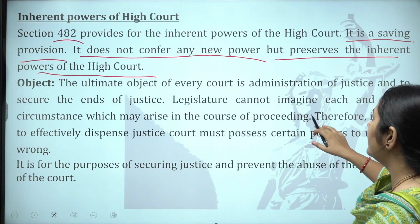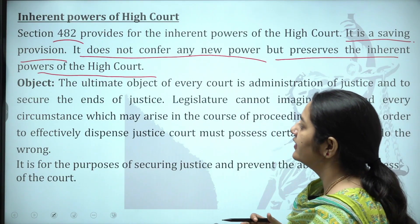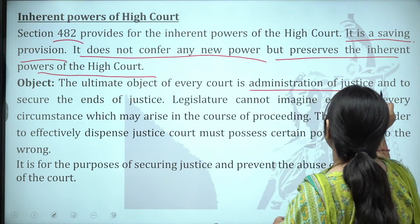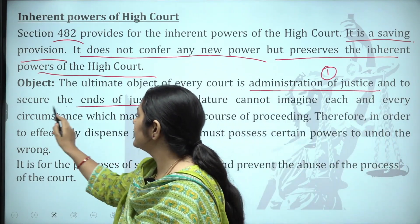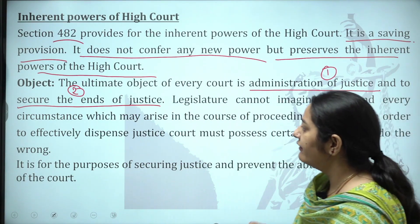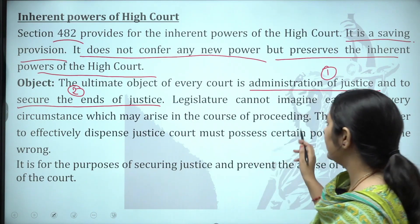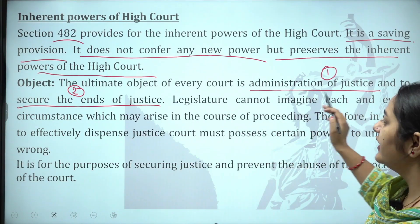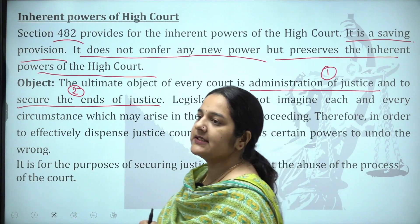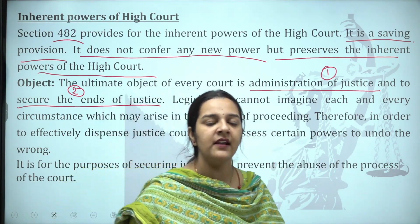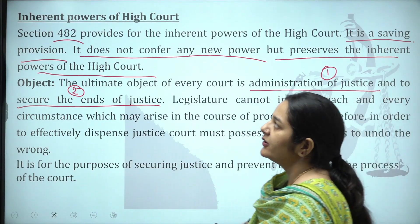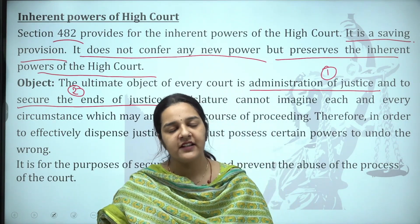The ultimate object of every court is the administration of justice and to secure the ends of justice. The first object is the administration of justice, and the second is to secure the ends of justice. The legislature cannot imagine each and every circumstance which may arise in the course of proceedings. Therefore, in order to effectively dispense justice, the court must possess certain powers to undo the wrong. Inherent power is given to ensure justice is secured and the process of court is not abused.